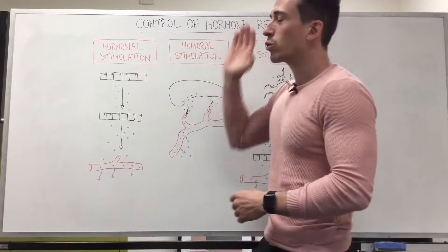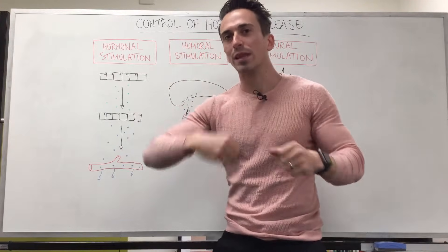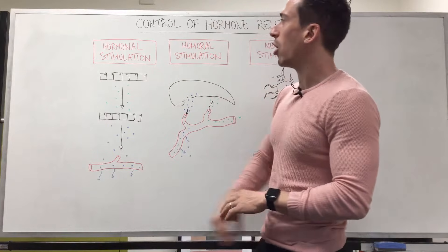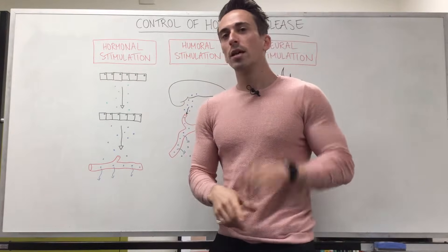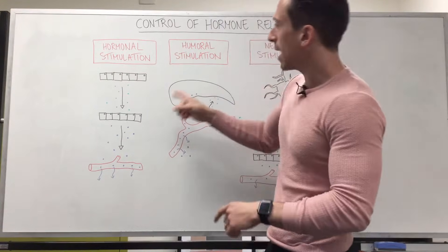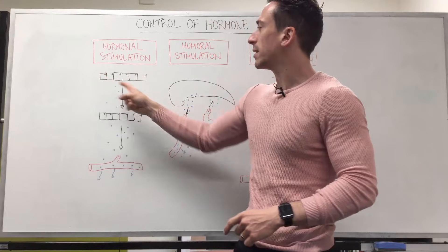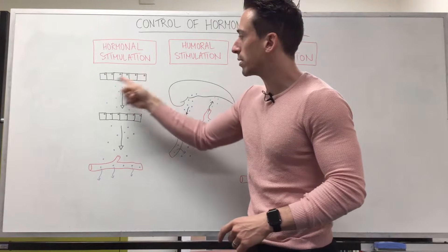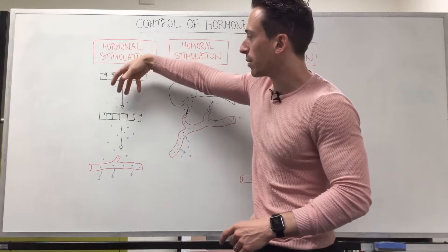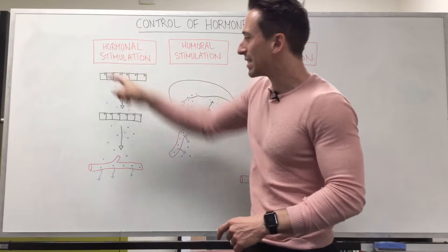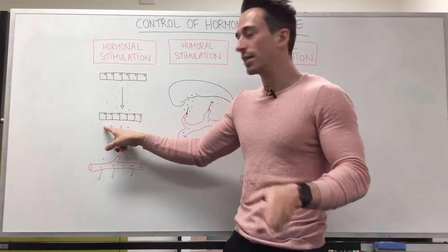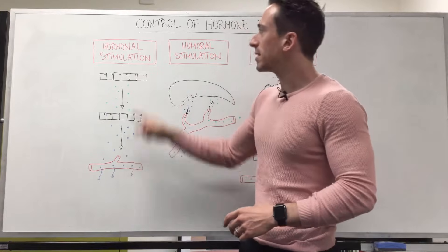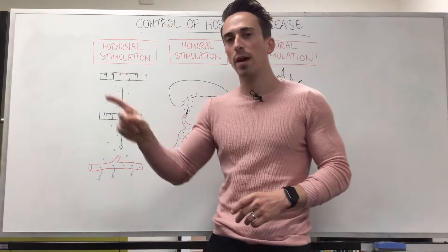The first way that cells or glands can release their hormones is through the stimulation of other hormones. Some cells or glands that produce hormones can release those hormones into the bloodstream, where they float through and stimulate other cells and glands to release their hormones. This is the hormonal stimulation method.